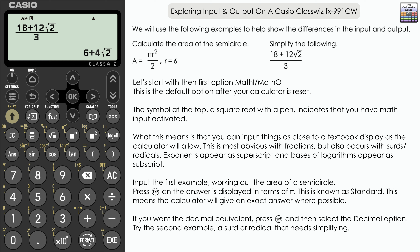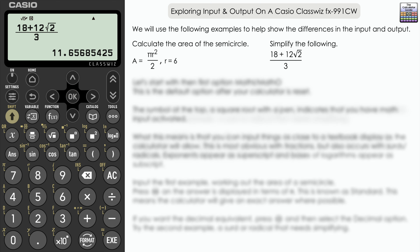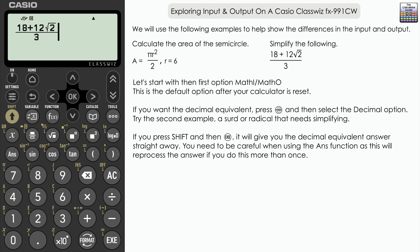If we want the decimal answer, go to format and select decimal for the decimal approximation. Incidentally, there is a way of getting the decimal approximation straight away even with math output selected: use shift and then execute, which has an approximately equal sign, and that gives you the decimal approximation straight away. However, you have to be careful using that, particularly with the answer feature, as it will reprocess your calculation. The slightly preferred option would be to use format and change to decimal.